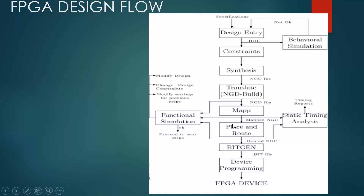When this is done, we go for the generation of the bit file. What we have done so far: we converted the design into a circuit, the circuit into logical blocks, and targeted it to the FPGA. But the FPGA won't be able to take it directly, so we need to convert it into a bit file. The FPGA can only take it as a bit file, so we convert the place and route information of the synthesized design into a bit file.